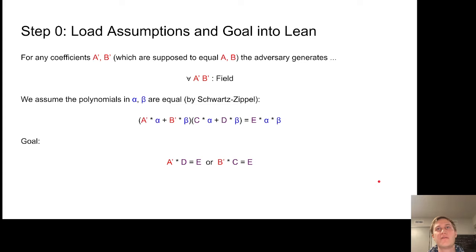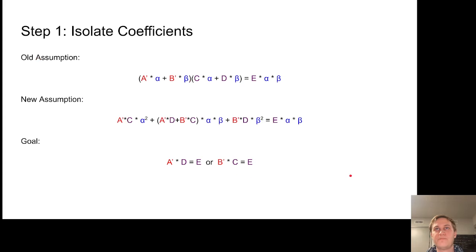Going through how the proof works in more Lean-like notation, the first thing we do is load all our assumptions and goals into Lean. We have A prime and B prime, which are the supposed coefficients that should equal A and B. The adversary can generate them however they want, but the equation is that A prime times α plus B prime times β, multiplied with C times α plus D times β, equals E times α times β. From that we want to prove this goal - that the equation is true for A prime and B prime, whatever the adversary used.